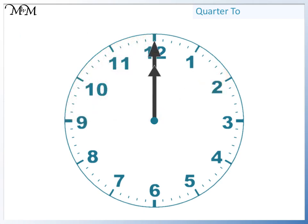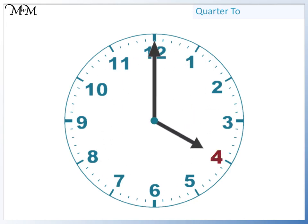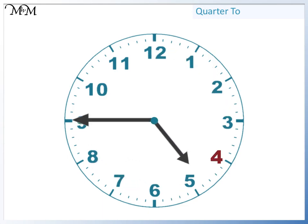This time we'll start at four o'clock. The minute hand moves three quarters of the way around the clock and points to nine. It will be quarter to the next hour, which is five. So the time is quarter to five.